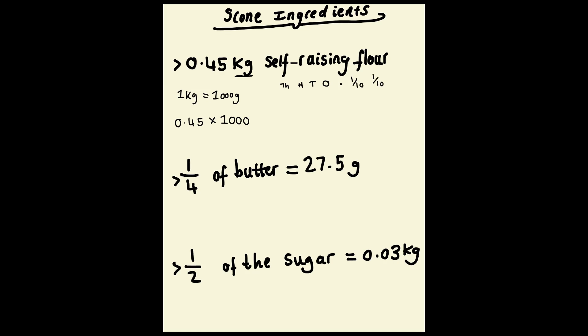We won't be using too much flour for this, so we need to convert them to grams. So I need to move each digit three places to the left on my place value chart, and therefore there are 450 grams of self-raising flour. So pause the video now and see if you can work out how much we need of butter and sugar.